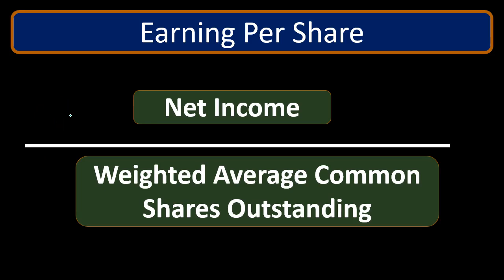Earnings per share is a very common ratio for analyzing stock, and gets into the type of analysis done when valuing a stock. As we start looking at financial statements, introducing these ratios is useful because they can help point out problems, detect errors, and support decision making. They're useful from a financial statement standpoint, a financial analysis standpoint, and an investor standpoint for determining the health of the business.